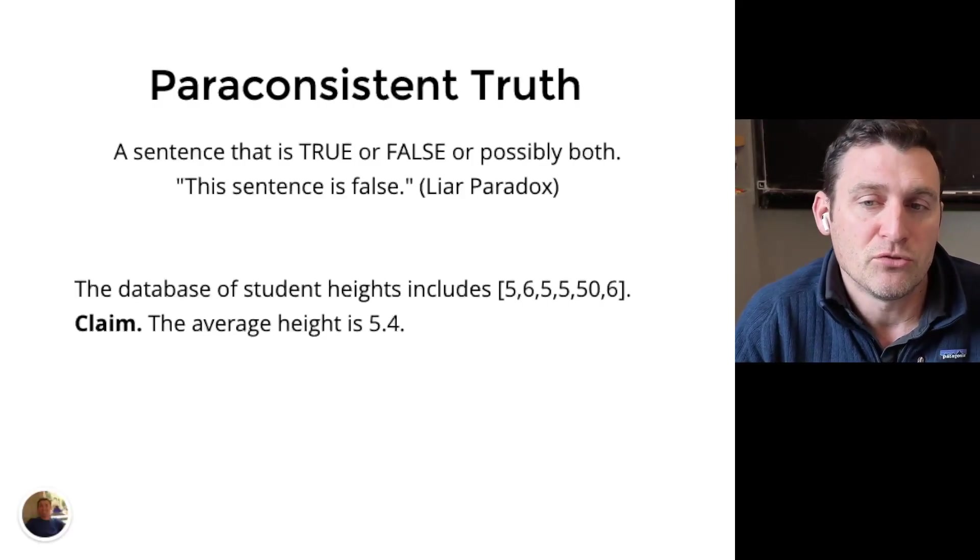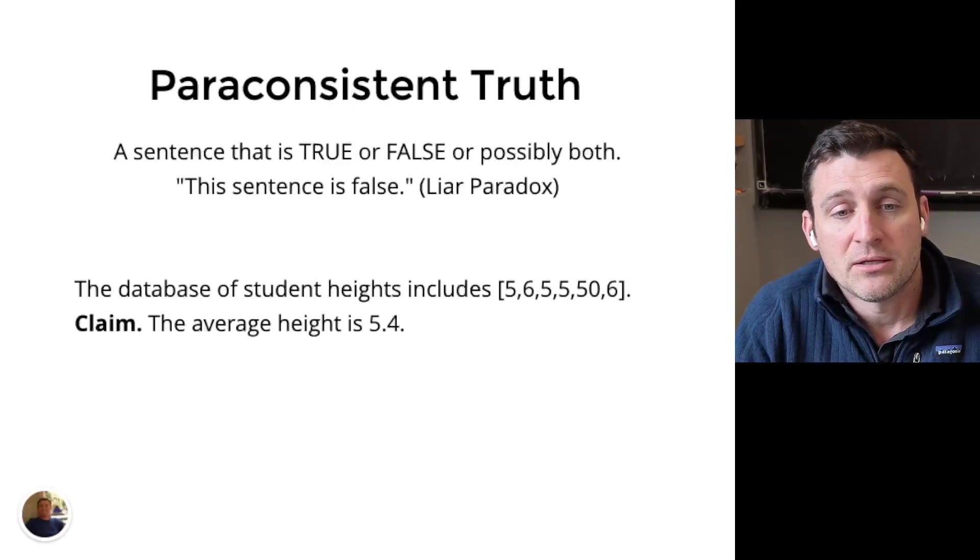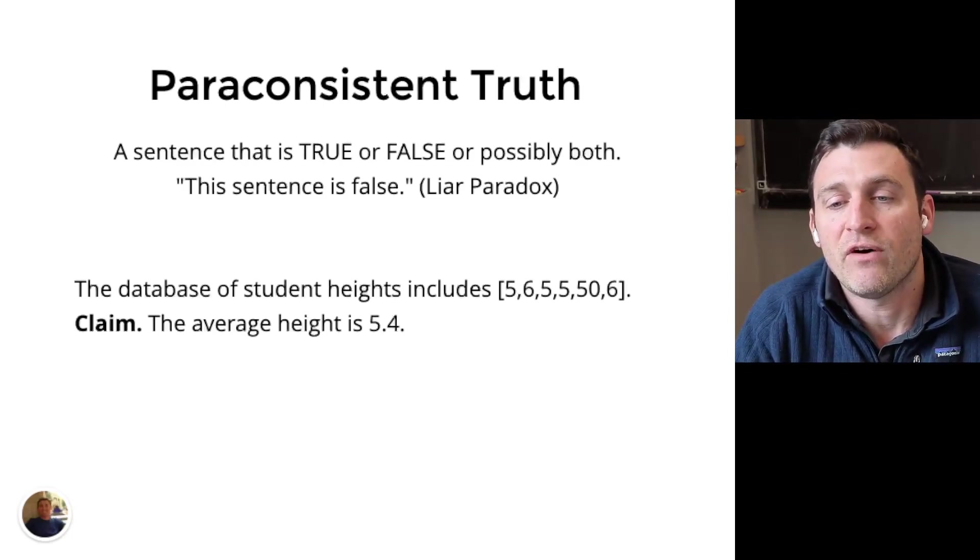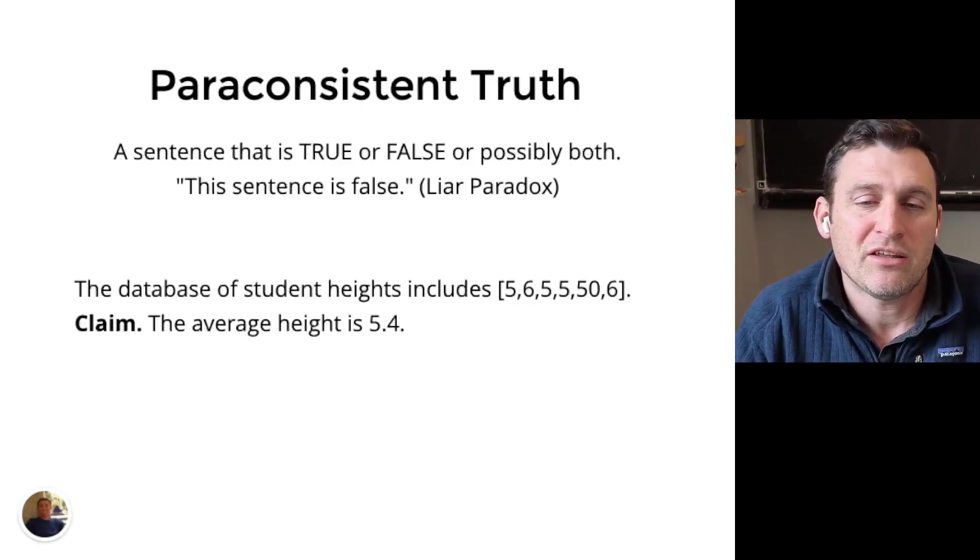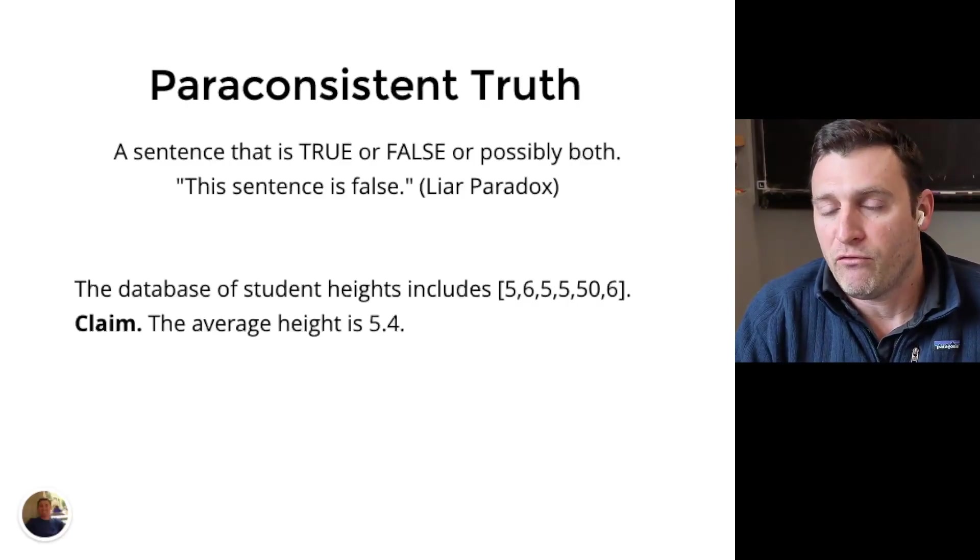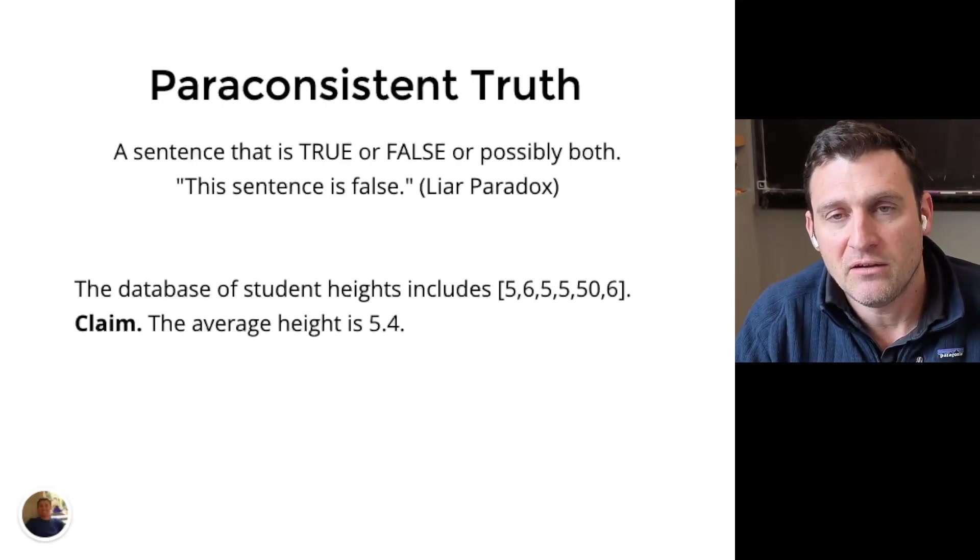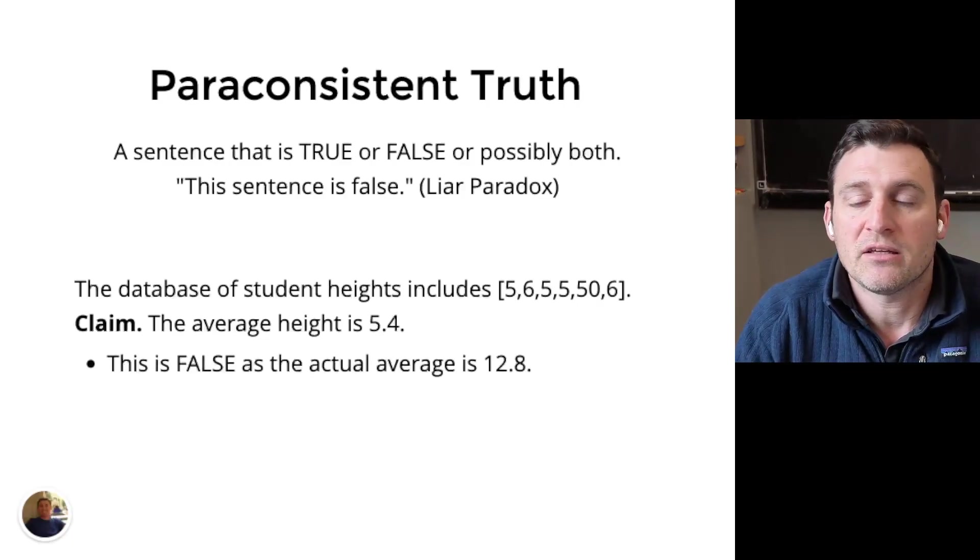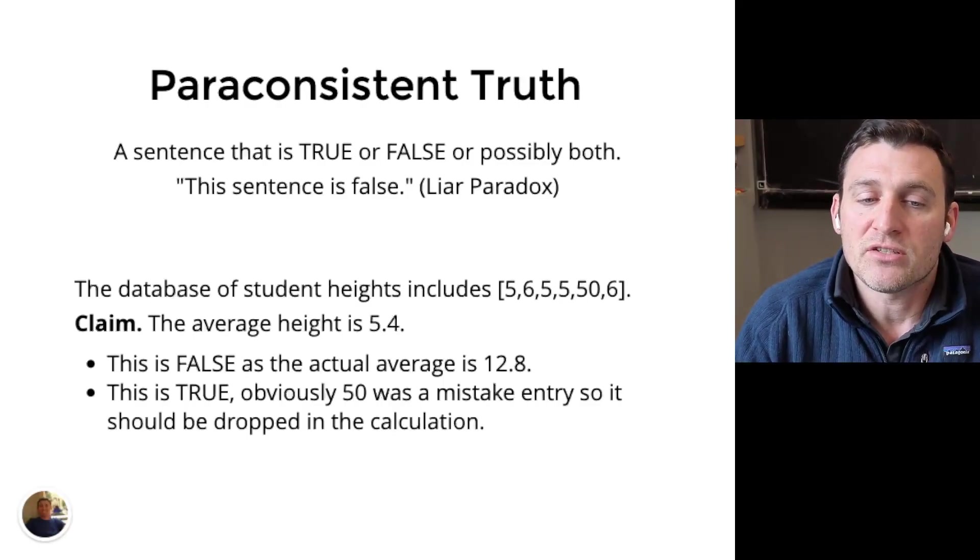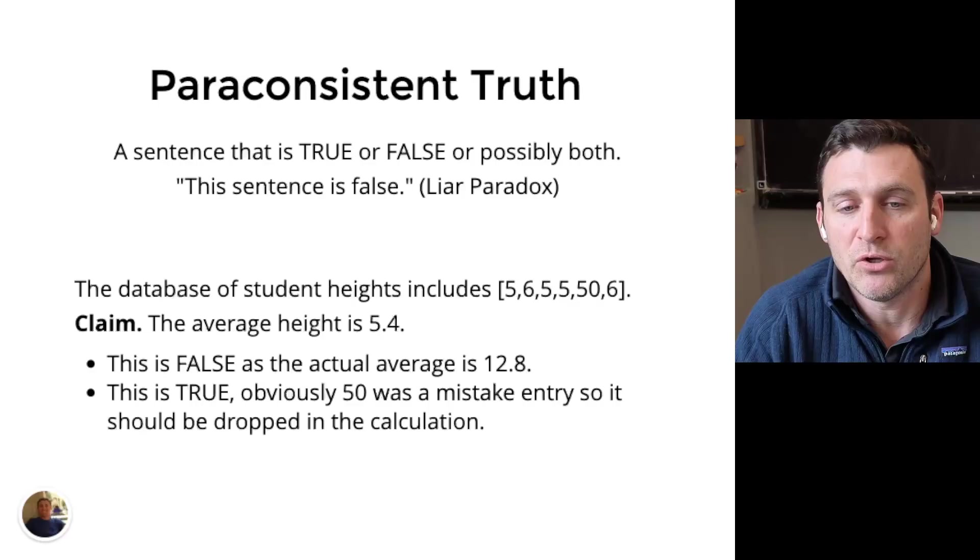Now, the liar paradox is fun, but it's not really a useful tool to answer. But there are many problems in modern-day data science which really ask upon questions like this paradox. Let's imagine this very simplified version of a database, student heights. We see there are students that have heights 5, 6, 5, 5, 50, and 6. Regardless of what the units are, probably feet, you can see that 50 seems like a strange number to have as a height of anybody. Now, the claim is that the average height is 5.4. You can tell right away from the data here this can't be the right average because any average that involves a number like 50 is going to blow that number up quite a bit.